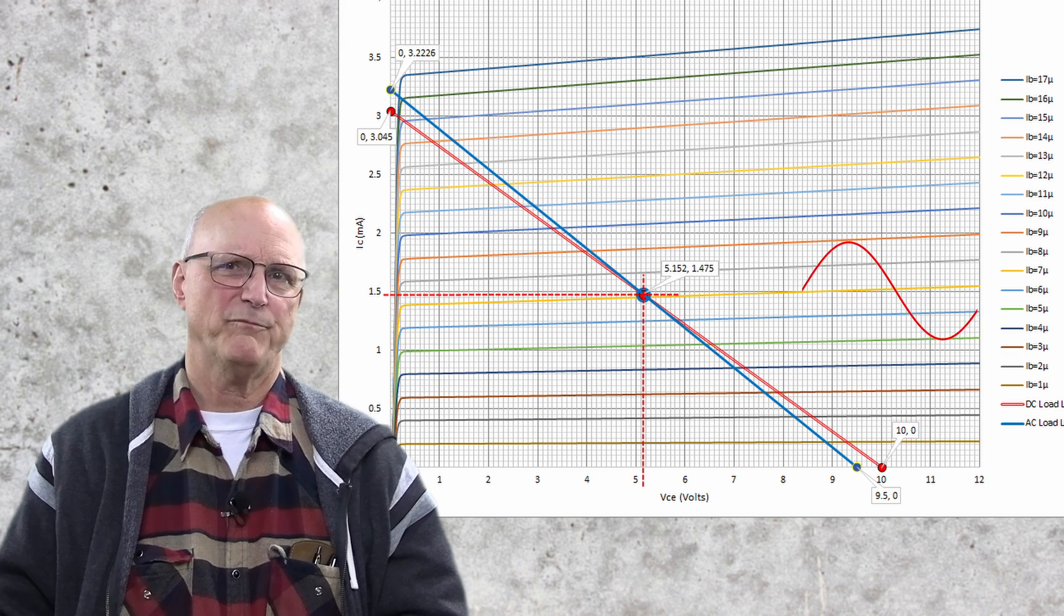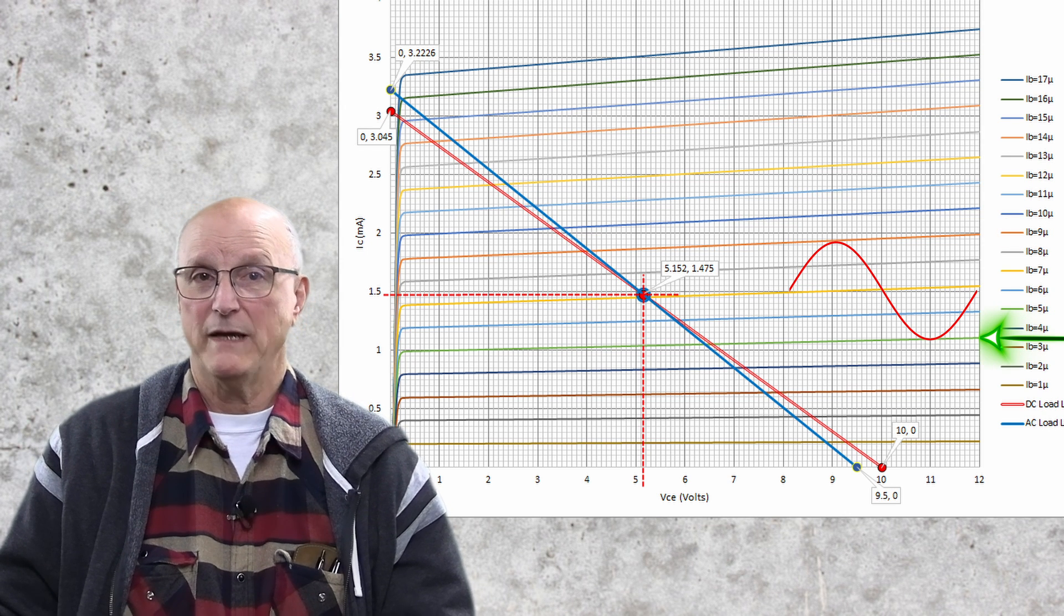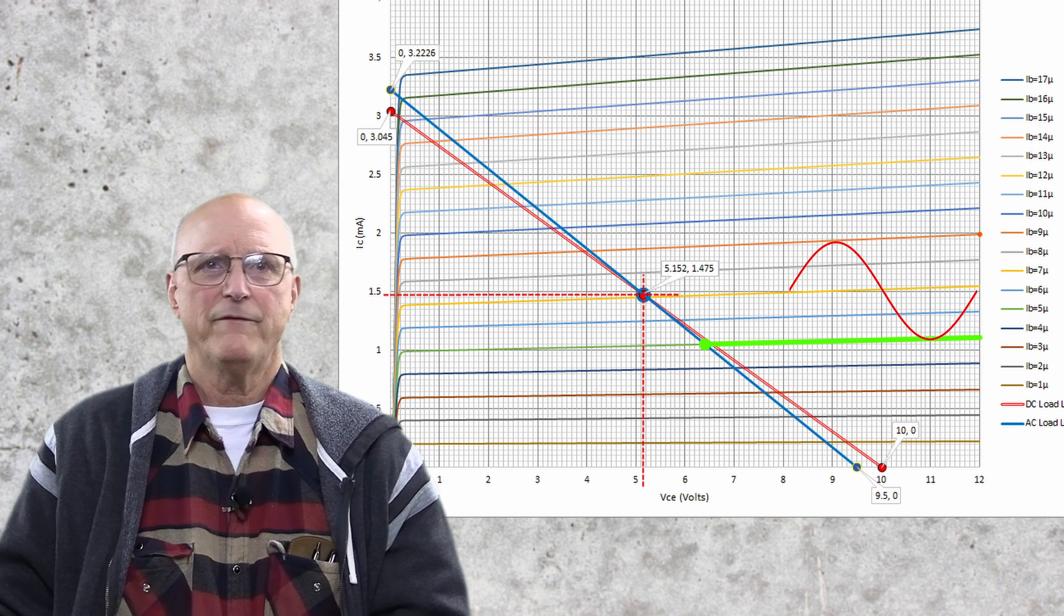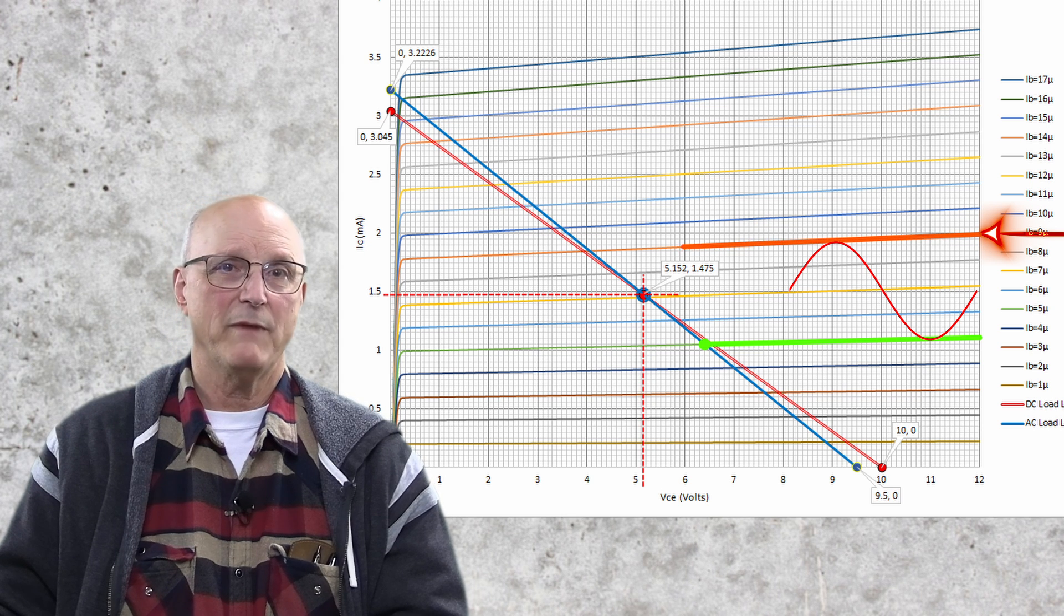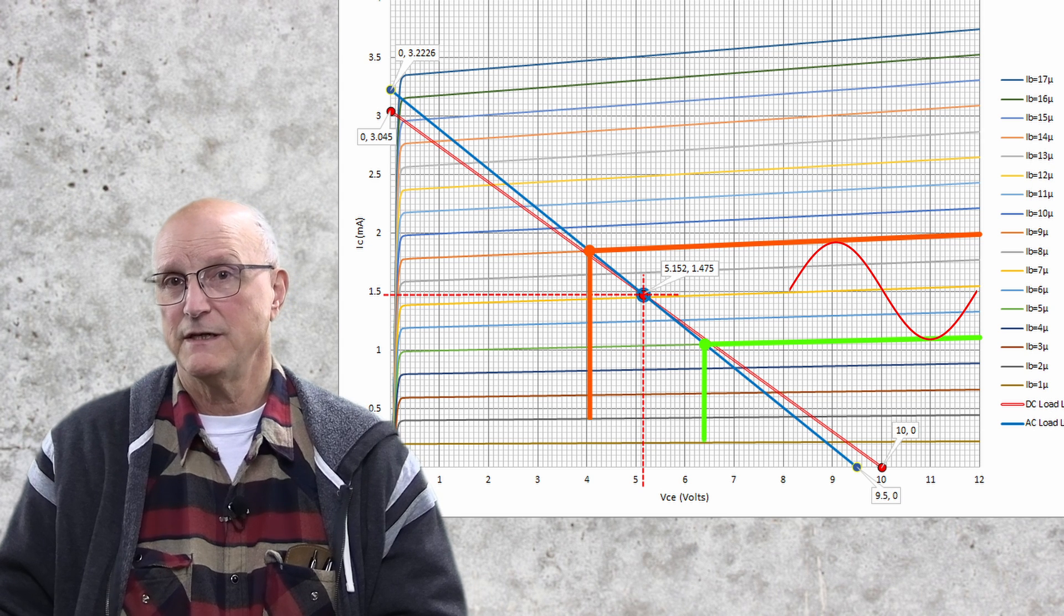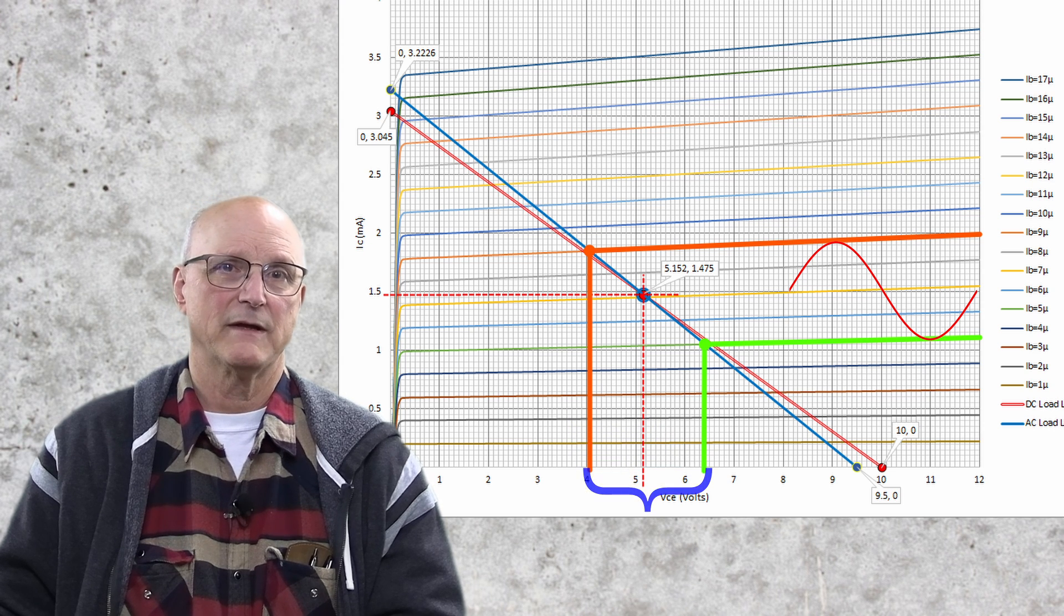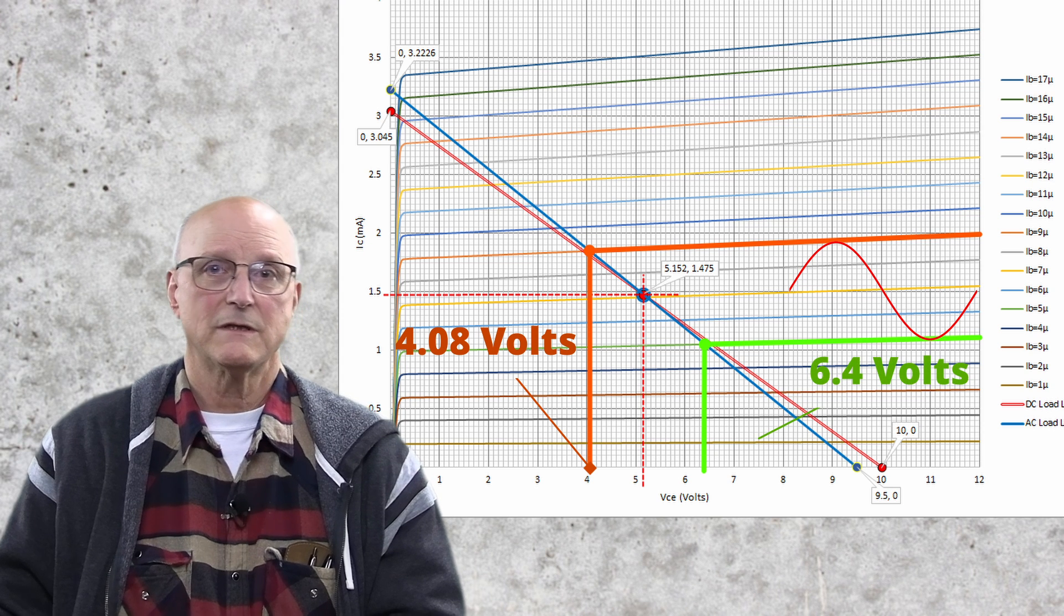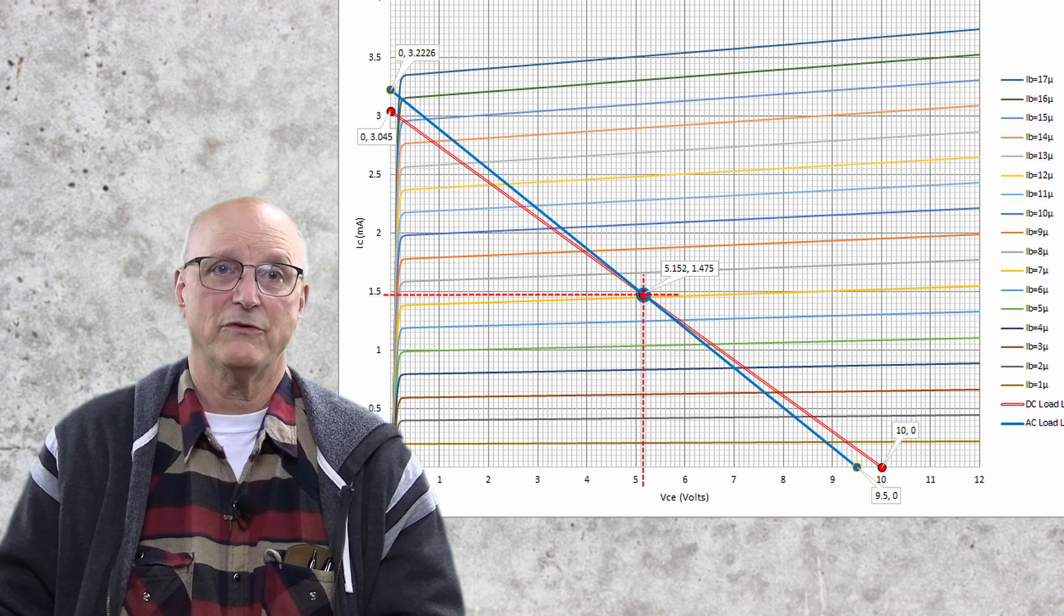Suppose that you anticipate a change of base current which will swing from 5 microamps to 9 microamps. We find the 5 microamp base current trace, follow it to where it crosses the AC load line and make a dot there. Then, we find the 9 microamp base current trace, follow it to where it crosses the AC load line and make another dot there. Now, draw vertical lines down from these two dots to the horizontal VCE axis. You can now read the anticipated collector emitter voltages from the horizontal axis.